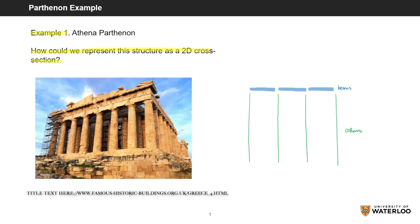Second, we will represent the connecting parts as pin joints, meaning no moment is transferred between members. Third, we will show with arrows how the weight of the columns exerts a force only through the center of mass. Recall from earlier that the center of mass is the average position of the entire object.